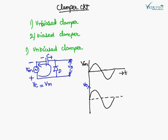Now we want to find out the output voltage, so we apply KVL in the loop. Once the capacitor is charged, the diode is reverse biased. Applying KVL with the diode reverse biased gives: Vin + Vc − Vout = 0. This gives Vout = Vin + Vm.